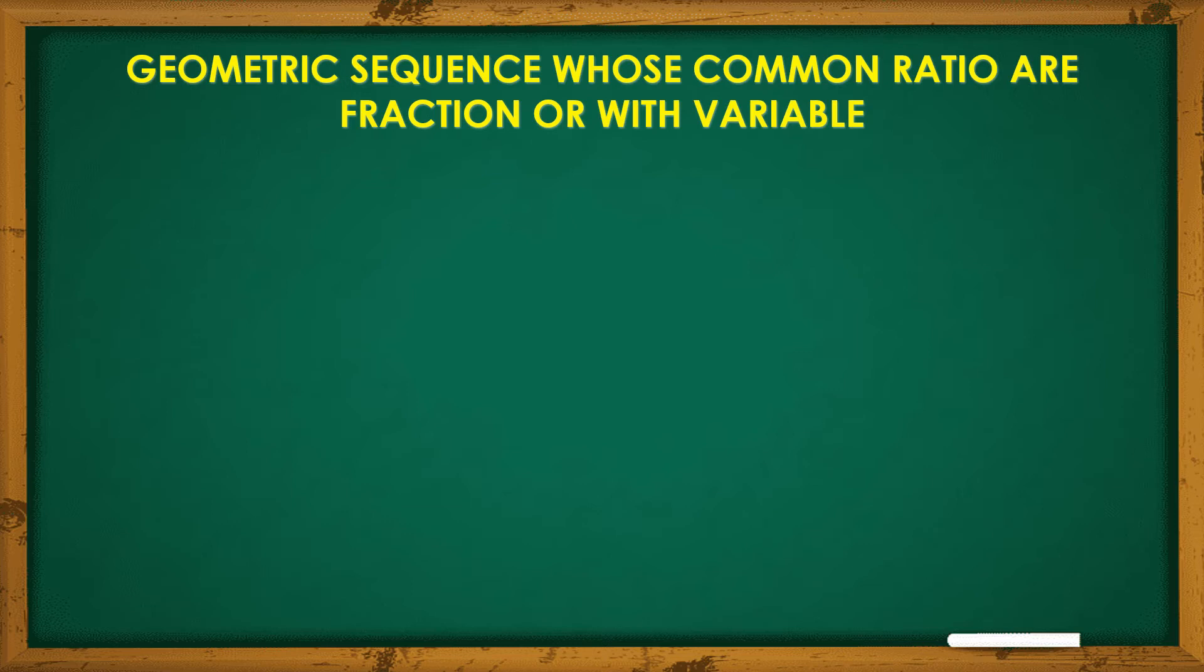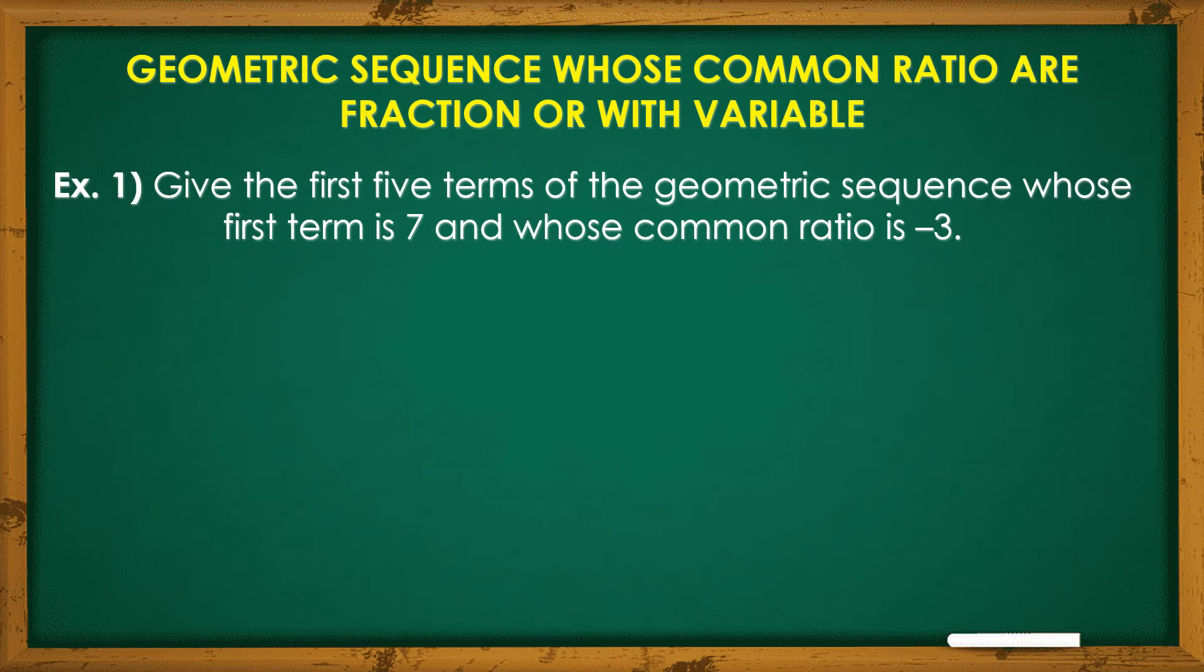Let's consider first example number 1. Give the first 5 terms of the geometric sequence whose first term is 7 and whose common ratio is negative 3. We need to complete the sequence, 7 and yung mga nawawalang terms. Gamit ang common ratio ng negative 3, anong gagawin? Correct! Simple multiplication.